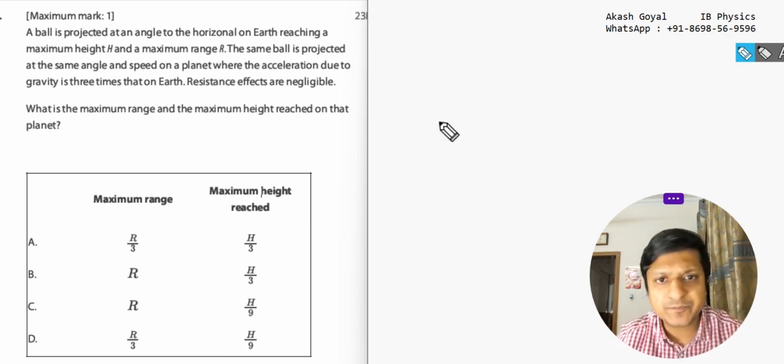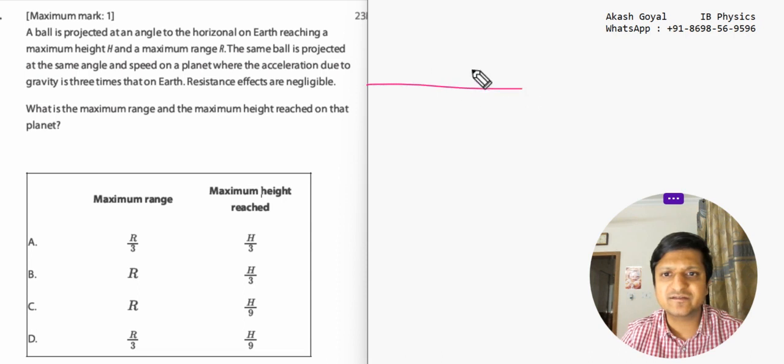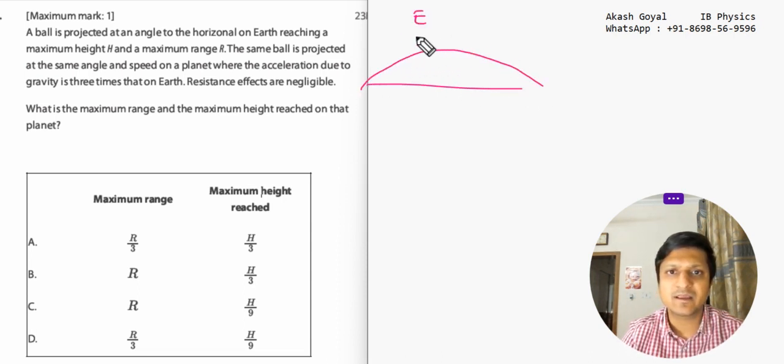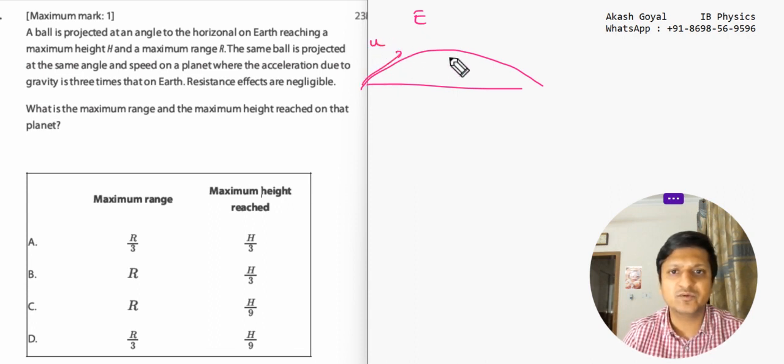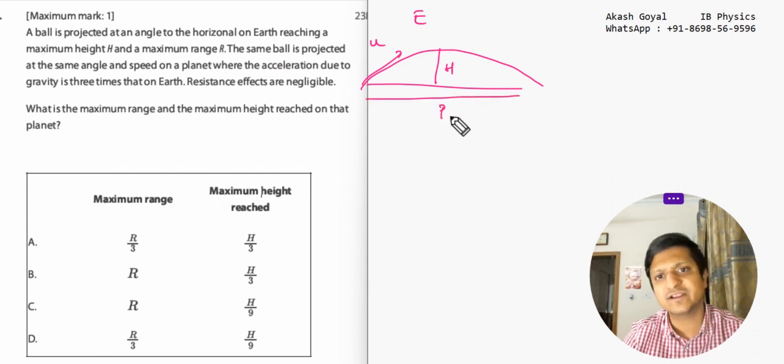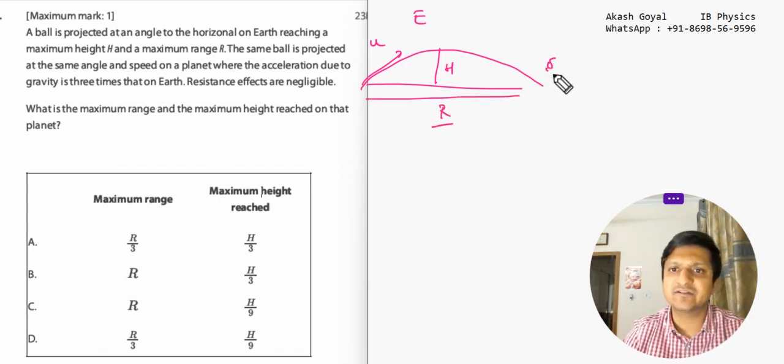So there is a ball projected on Earth with velocity u, maximum height h, range r, and gravitational acceleration g. The question asks: if the similar activity is done on another planet where the gravitational force is three times that of Earth,